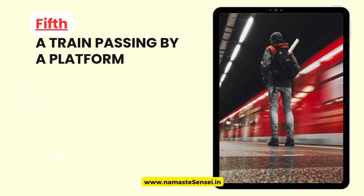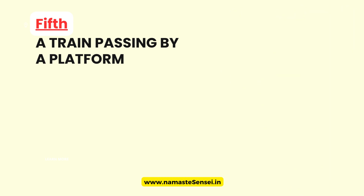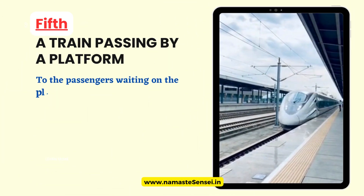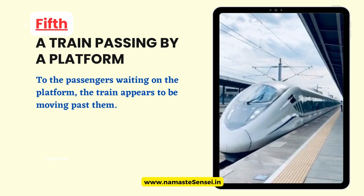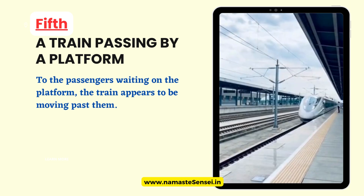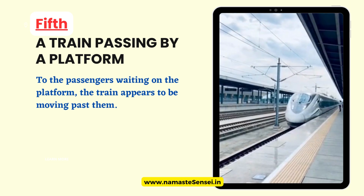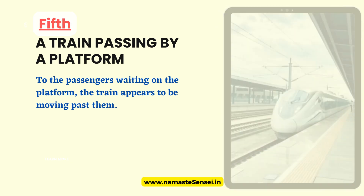Fifth, a train passing by a platform. Have you ever gone by train and observed people outside the train waiting on the platform while your train was passing by? When a train passes by a platform where passengers are waiting to board, it is an example of relative motion. To the passengers waiting on the platform, the train appears to be moving past them. However, to someone on the train, the platform and the passengers waiting on it appear to be moving in the opposite direction.